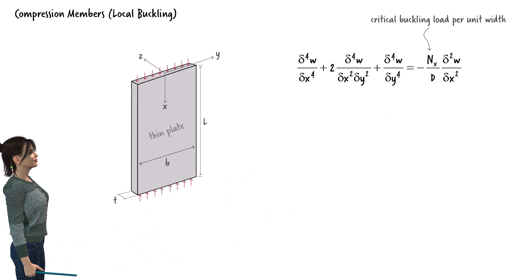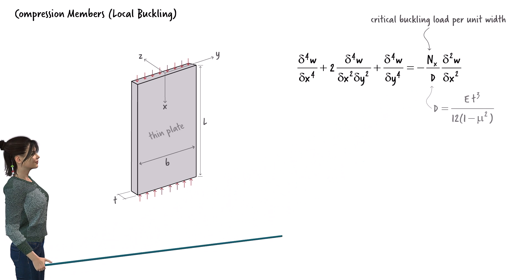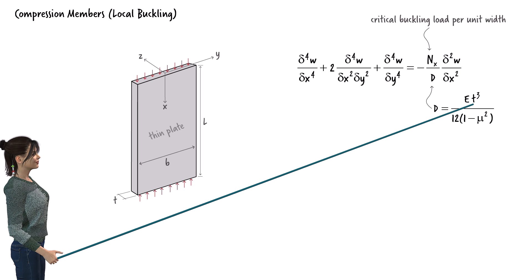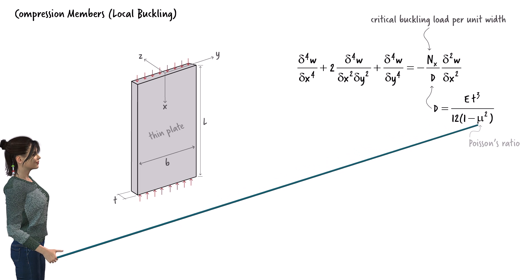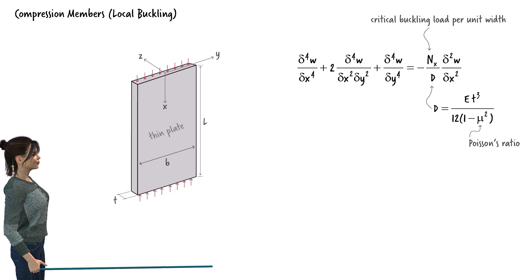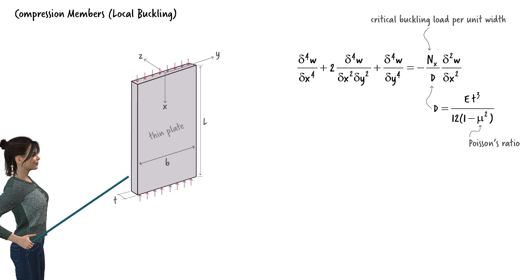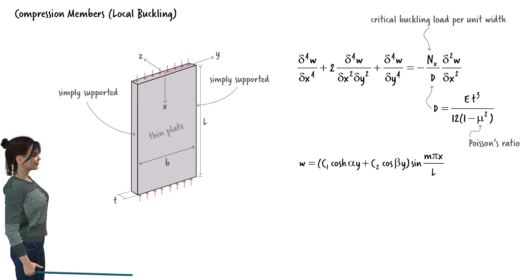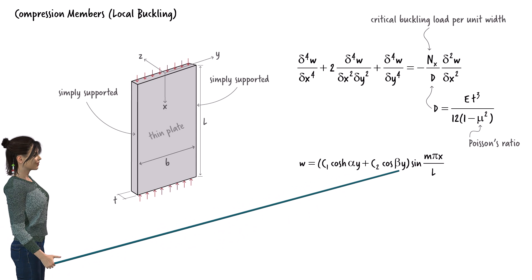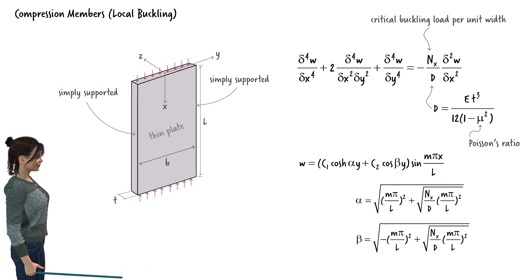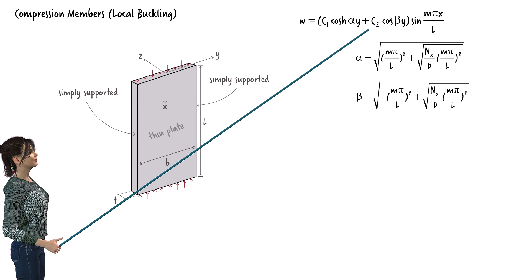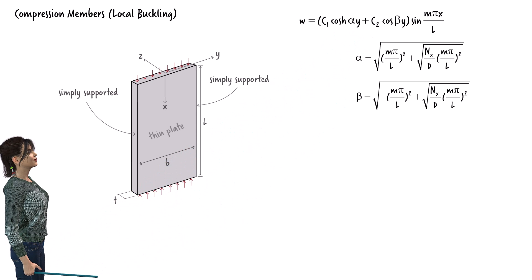For a thin rectangular plate, D equals a function where E is the modulus of elasticity of steel, t is the plate thickness, and mu is Poisson's ratio. Assuming the plate is simply supported along two edges, the solution of this fourth-order differential equation can be written in a form where alpha and beta are constants, and C1 and C2 are to be determined using the plate's boundary conditions.